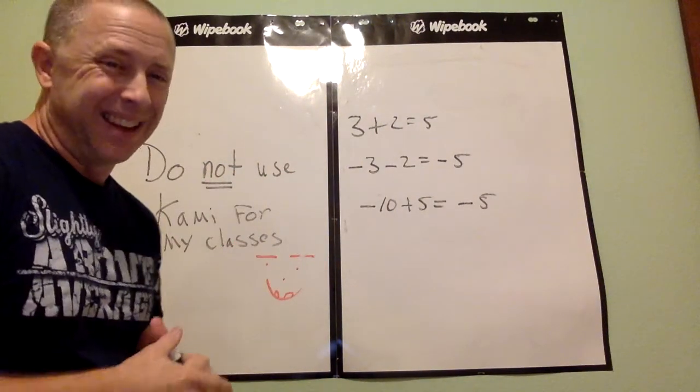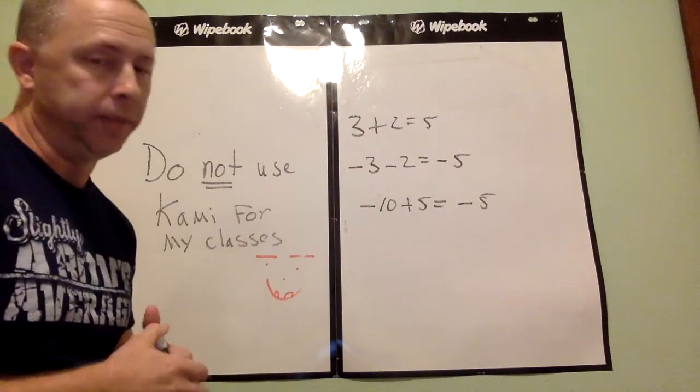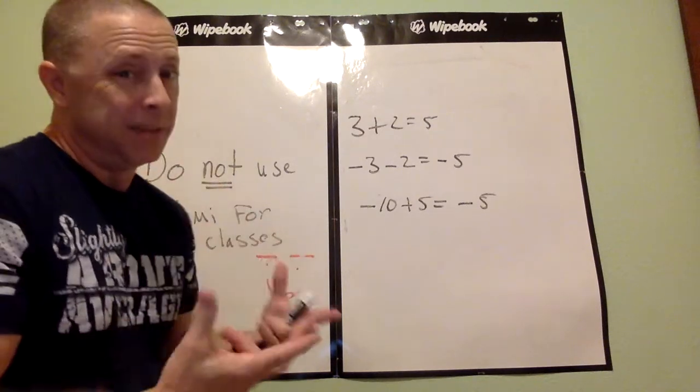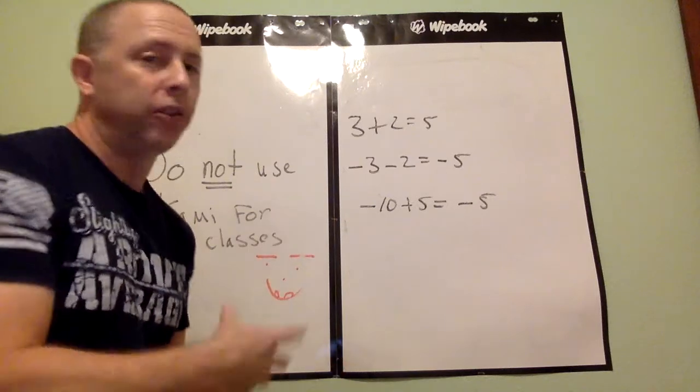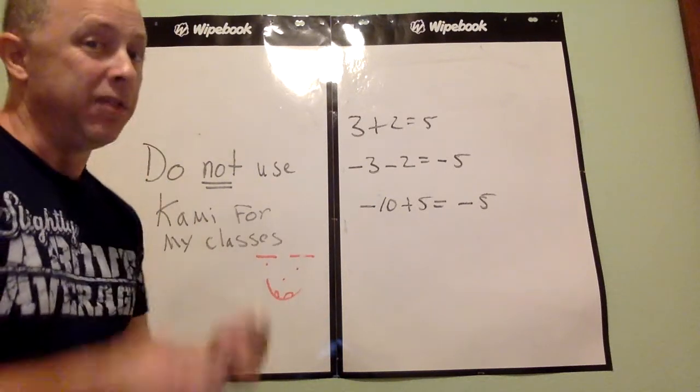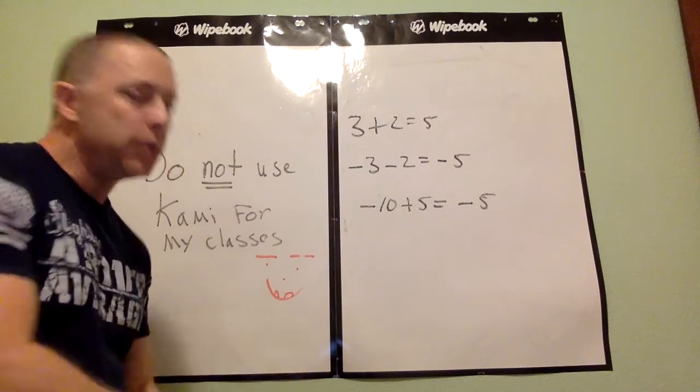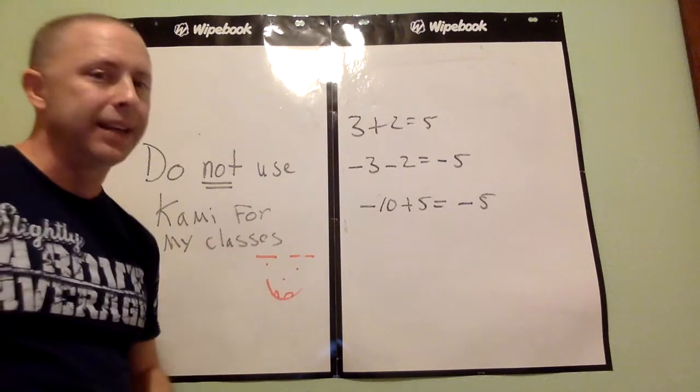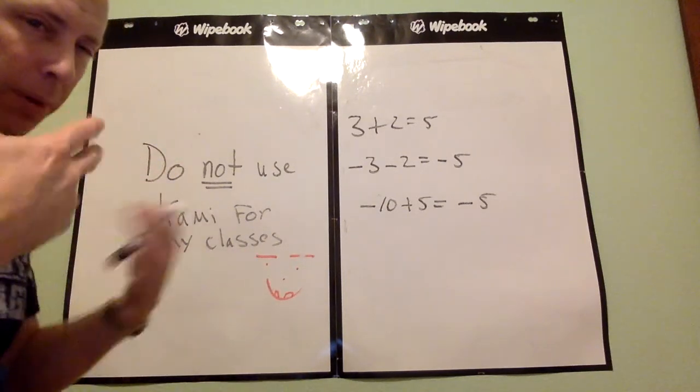These are basic addition and subtraction of integer problems. It's nothing really that complicated. Here's the safest way generally to think about it. If the big number has an addition sign, your answer is probably going to be positive. If the big number has a negative sign, your answer is probably going to be negative. And that's kind of a way I like to think about it a little bit in my mind.